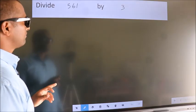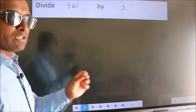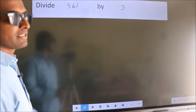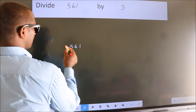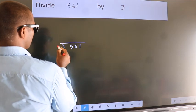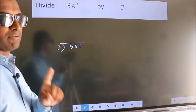Divide 561 by 3. To do this division, we should frame it in this way: 561 here, 3 here. This is your step 1.